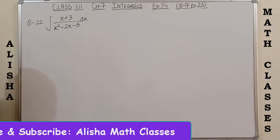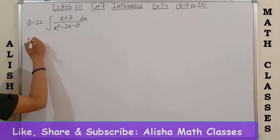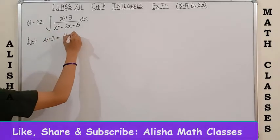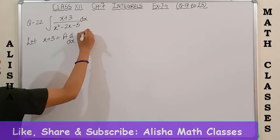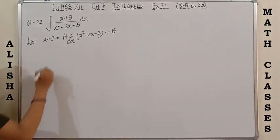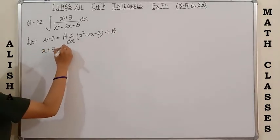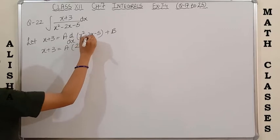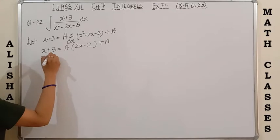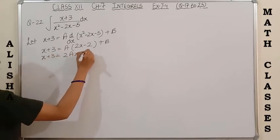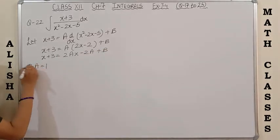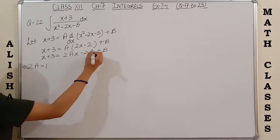Question 22: integration of (x+3) upon (x²-2x-5). Proceeding with the same steps as done in earlier questions, this x+3 is going to be A times the derivative of the denominator x²-2x-5, plus B. Taking the derivative: derivative of x² is 2x, derivative of 2x is 2, and the constant term is 0. Opening this I get 2Ax minus 2A plus B. Comparing coefficients, 2A equals 1 and -2A+B equals 3.